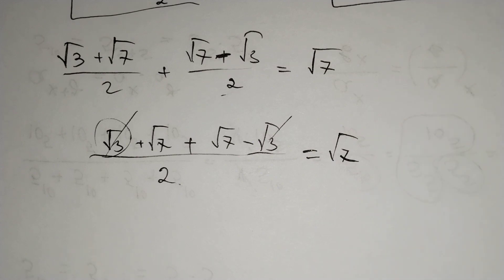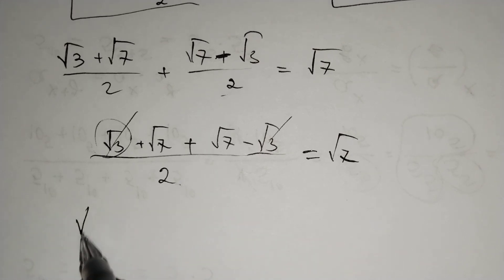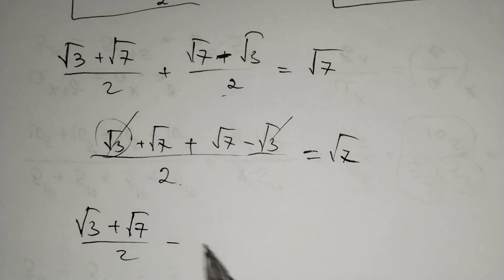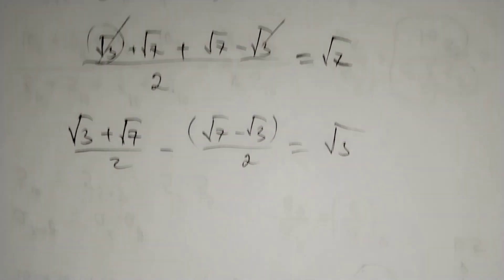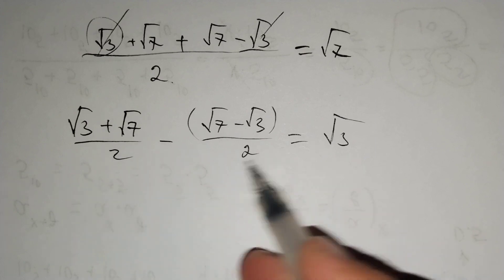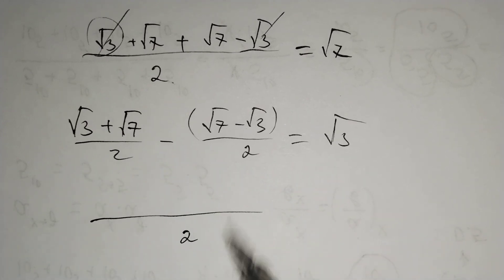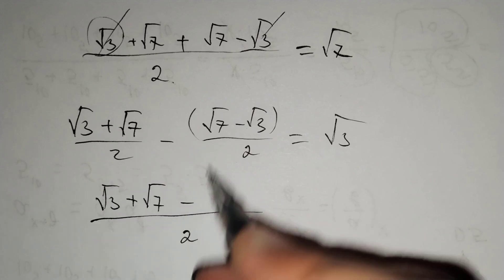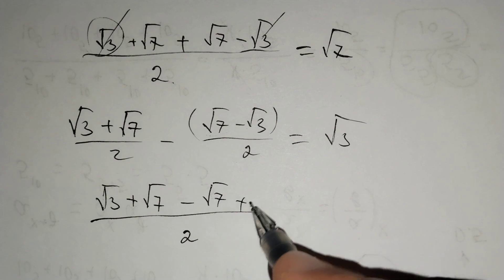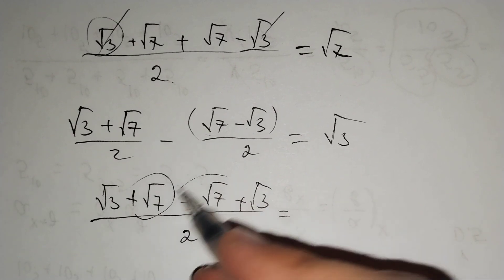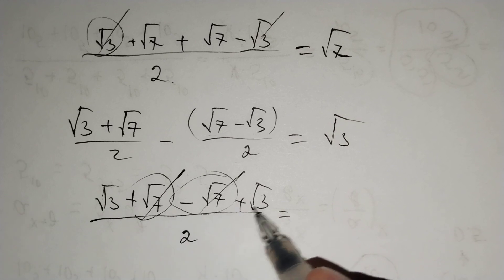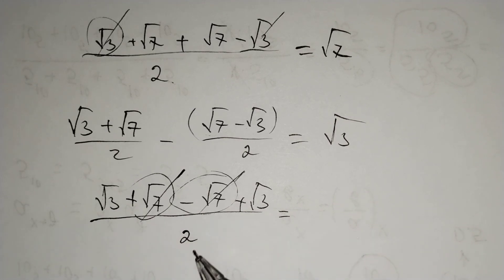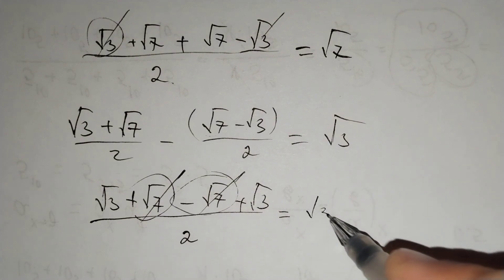And for the second equation, a minus b should equal square root of 3. This is also true because square root of 3 plus square root of 7 over 2, minus square root of 7 minus square root of 3 over 2, equals square root of 3. The denominators are the same, so we get square root of 3 plus square root of 7 minus square root of 7 plus square root of 3. Square root of 7 and negative square root of 7 cancel, and 2 times square root of 3 remains. Dividing by 2 gives square root of 3. That's true.